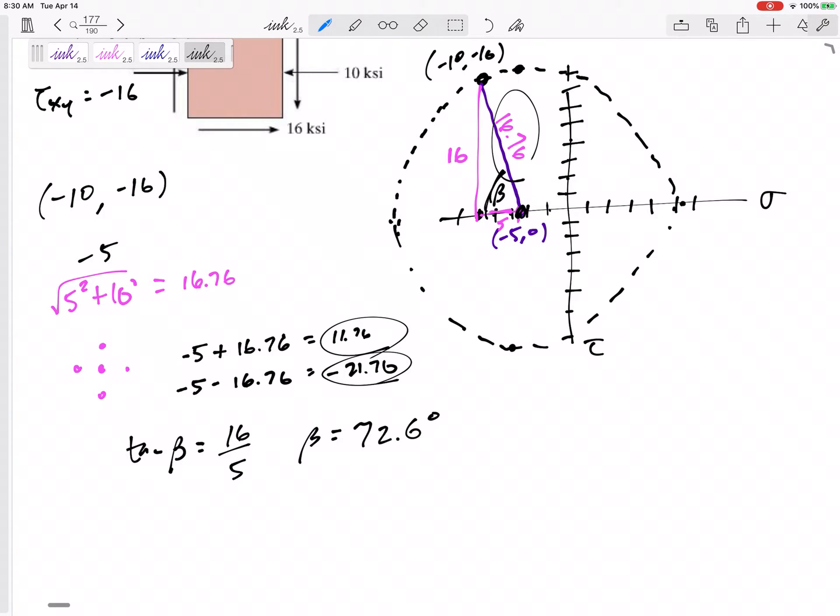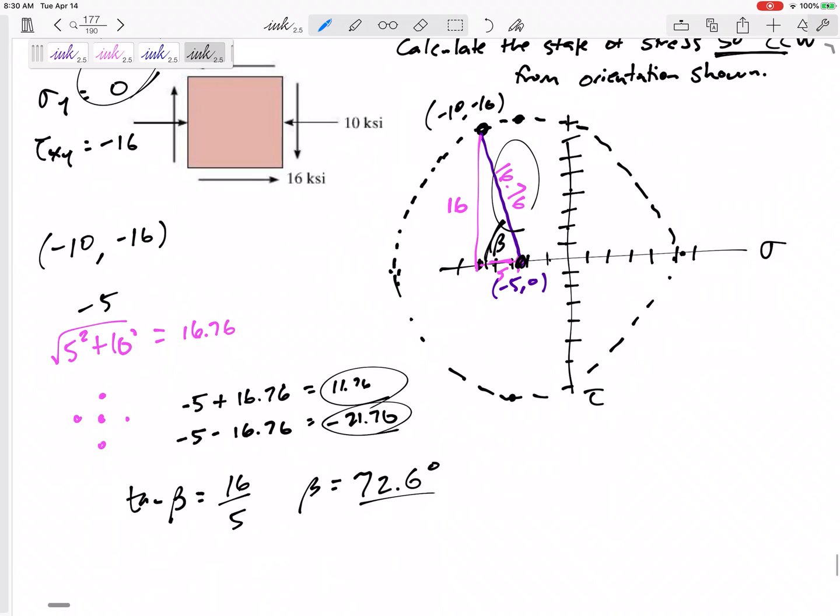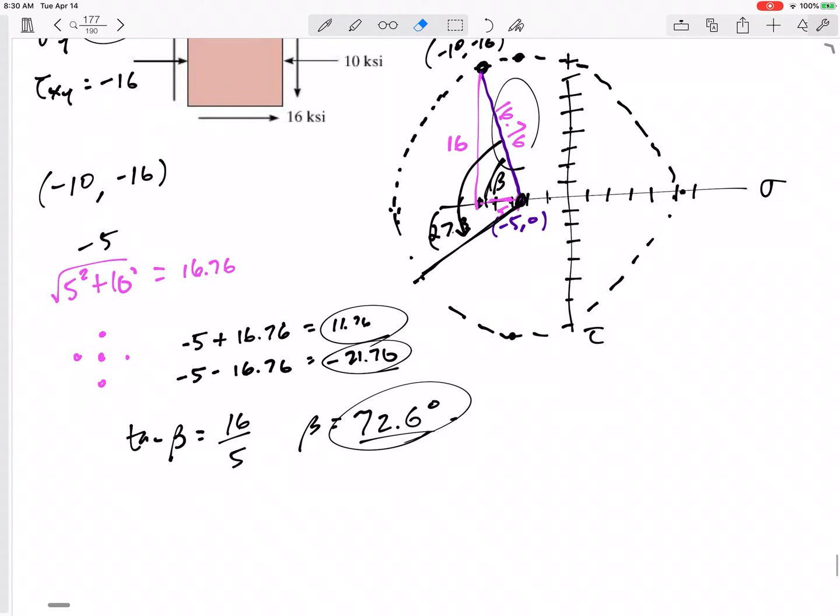I'm starting at 72.6 above horizontal and want to go 100 degrees counterclockwise. That leaves me right here. If I was 72.6 above, that leaves me 27.3 degrees under the x-axis. 72.6 minus 100 degrees. I'm 27.3 degrees below horizontal.